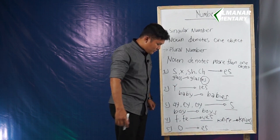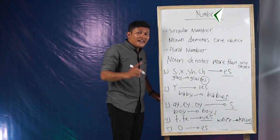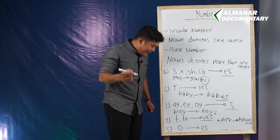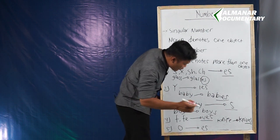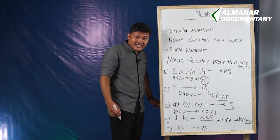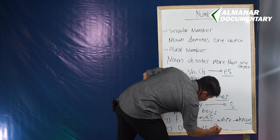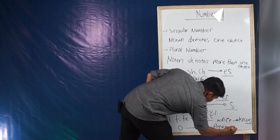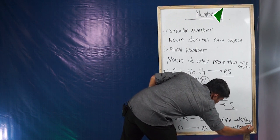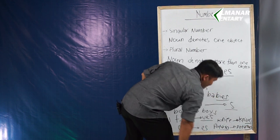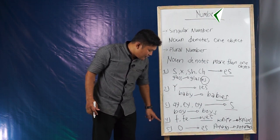The last rule: when the ending of a singular word ends with O and you want to turn it into the plural number, you just need to put ES at the end of the word. For example, 'potato' becomes 'potatoes'.